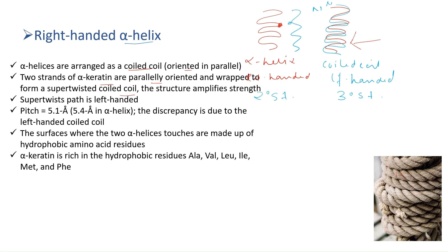The twisting in the coiled-coil structure is left-handed. In a regular alpha helix, the pitch is 5.4 Å, but in the coiled-coil structure the pitch is 5.1 Å. This difference arises because of the left-handed coiling.